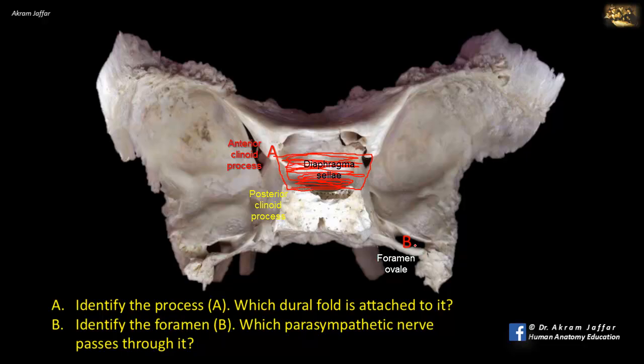The lesser petrosal nerve carries parasympathetic fibers which originated in the glossopharyngeal nerve, carrying them from the tympanic plexus to the otic ganglion, which is located in the infratemporal fossa. So the answer for B is foramen ovale, and the parasympathetic nerve fibers are those located in the lesser petrosal nerve — not in the mandibular nerve, because the mandibular nerve carries somatic motor and sensory fibers.